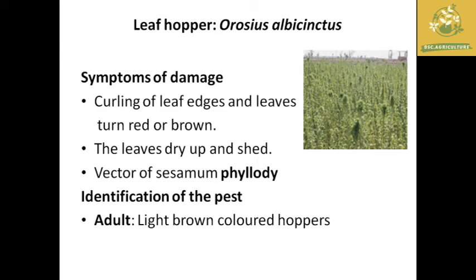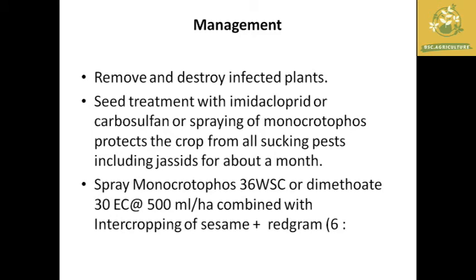The next important pest is the leaf hopper, where the scientific name is Orosius albicintus. The symptoms of damage include curling of leaf edges and leaves turning red or brown. It is also a vector of sesame phyllody, which converts reproductive parts into vegetative parts, showing a leafy structure on the plant. Leaves dry up and shed. Light brown colored hoppers are found in the field.